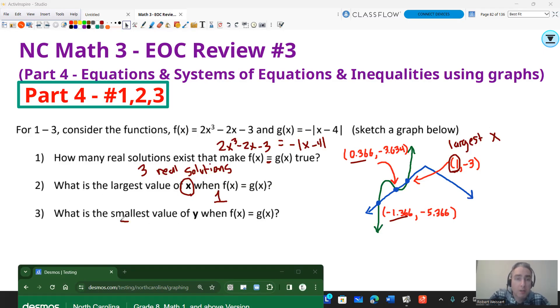The smallest y, the smallest y is going to be this number right here, this number -5.366 is the smallest y, -3.634 is the next smallest, -3 is the largest y. So that's going to be the smallest y.